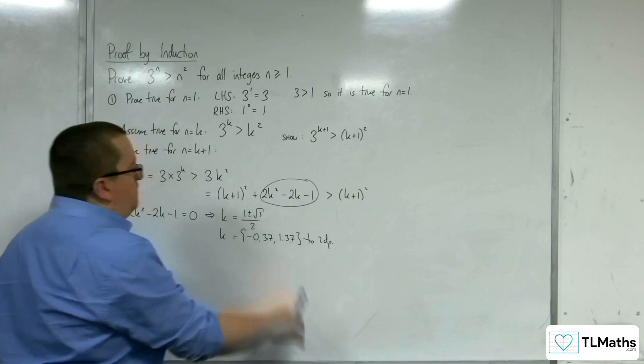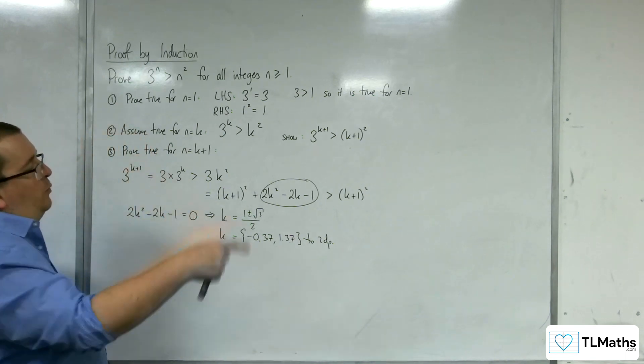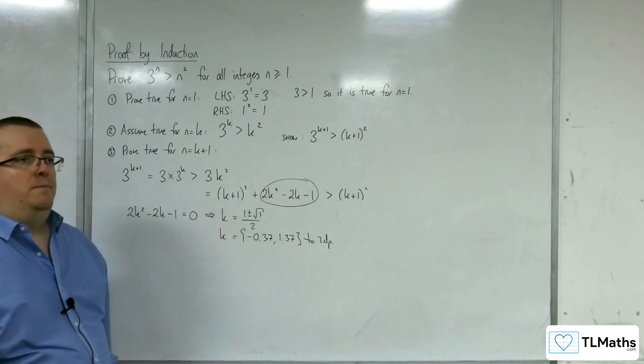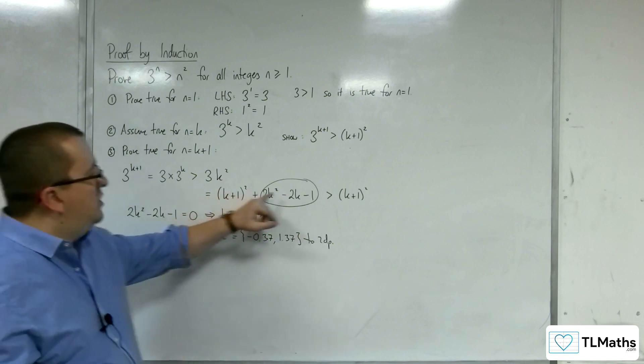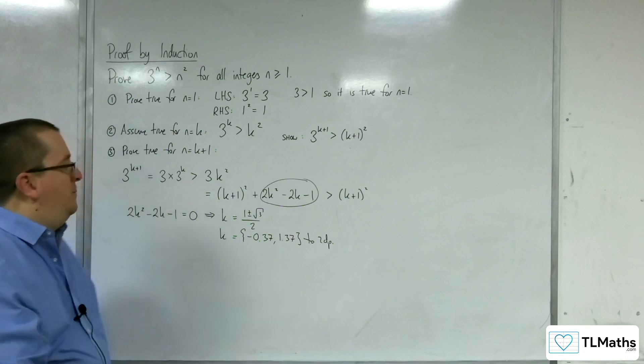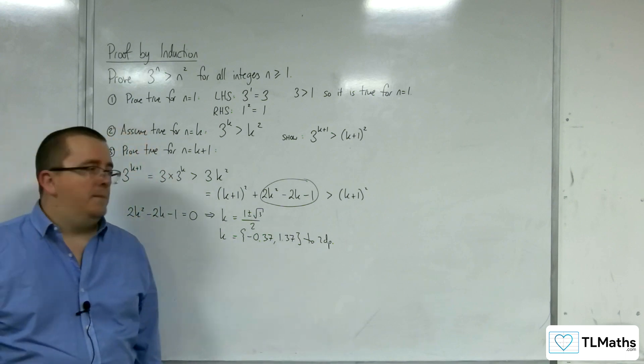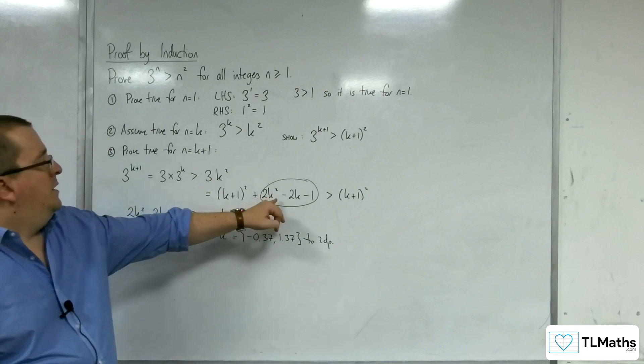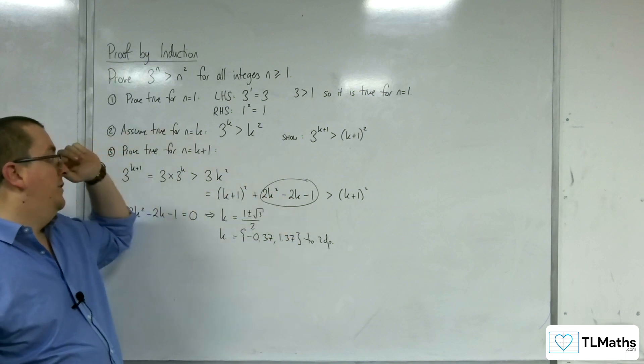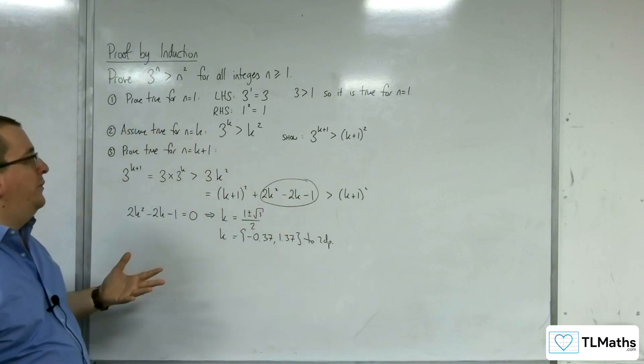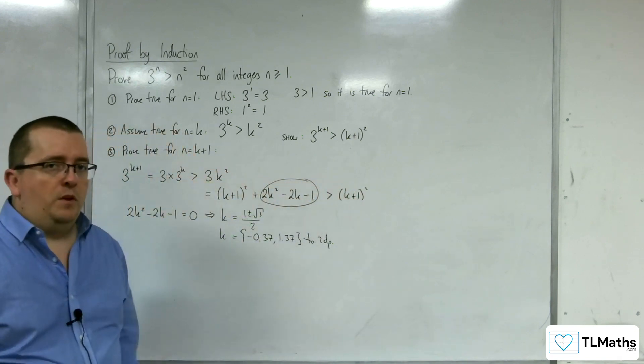Now, herein lies a snag, because here I would be saying, well, when k is 1, then this part is greater than 0, and so this holds. But that's not the case, because k is 1 is a value between the two roots of the quadratic. So when k is 1, you get 2 take away 2 take away 1. So actually, this is negative when k is 1. And the problem is because this statement doesn't work when k is 1.